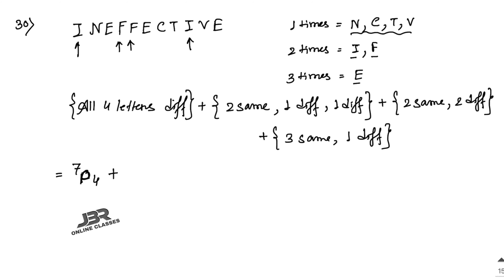Case 2: Two letters are same, one different, and one more different (i.e., 2 same + 2 different letters). For the pair of same letters, we can choose from I or F — that is 2 choices (or from the letters with repetition). Then for the 2 other different letters we use the remaining distinct letters. Arrangement = 4!/2!.